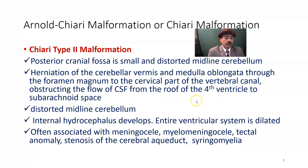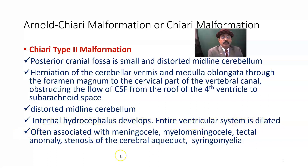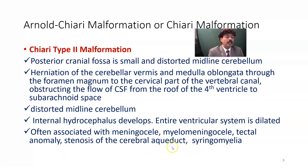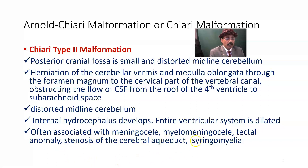This obstructs the flow of CSF from the fourth ventricle to the subarachnoid space. The entire ventricular system becomes dilated. Chiari type 2 is often associated with myelomeningocele, tectal anomaly — that is, anomaly of the tectal part of the midbrain — stenosis of the cerebral aqueduct, and syringomyelia. Syringomyelia is a cavity inside the central canal of the spinal cord, and it is especially associated with Arnold-Chiari type 2.